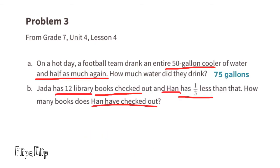Part b: Jada has 12 library books checked out, and Han has one-third less than that. How many books does Han have checked out? One-third of 12 is 4, so one-third less than 12 would be 12 minus 4, and 12 minus 4 is 8. So Han has 8 books checked out.